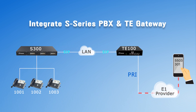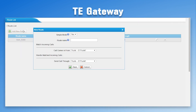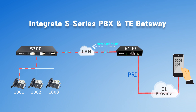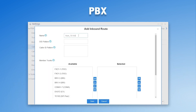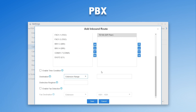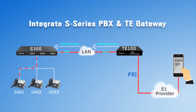Conversely, if we want incoming calls to the E1 line to reach specific extensions of the PBX, we route calls from the gateway to the PBX. Add a route on TE100 so calls from the E1 line are sent through the VoIP trunk to the PBX — all incoming calls from the E1 trunk will be routed to the PBX. Then on the PBX, create an inbound route, set the DID number of the E1 trunk, select the peer trunk, and set the destination to the extension range. Save and apply all configurations. Now external callers dialing the 3 DID numbers will be connected to the 3 extensions respectively.